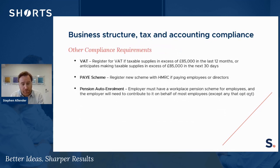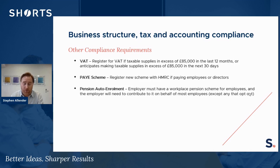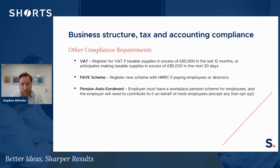Other key compliance requirements apply to all four business structures. VAT: if taxable supplies exceed £85,000, the business will need to register for VAT, add VAT to future sales, and reclaim VAT on purchases. PAYE: when the business employs individuals — whether employees or directors — the company, sole trader, or partnership will need to register a Pay As You Earn scheme with HMRC and pay over tax and national insurance on a monthly basis.